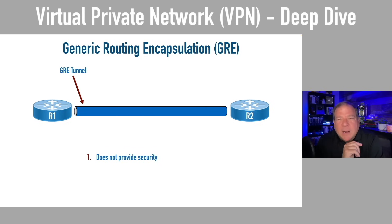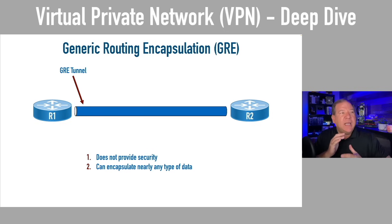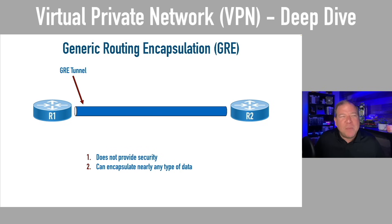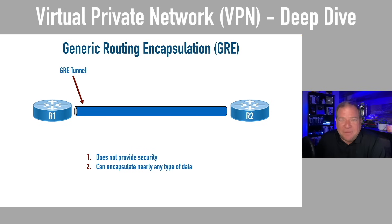We'll revisit how to overcome GRE's lack of security in a moment. But one great thing about GRE is that it is super flexible — it can encapsulate just about any kind of data you can possibly imagine. It can handle unicast traffic, broadcast traffic, multicast traffic, and even non-IP protocols like Novell's IPX or Apple's AppleTalk. It can encapsulate pretty much anything, which is great. It's flexible, but it's not secure — but don't worry, we'll address that. First, let me show you a demonstration of how to set up a GRE tunnel.